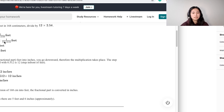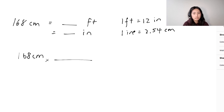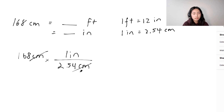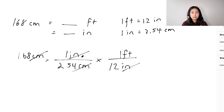You would start with 168 centimeters. Because this is in centimeters, you use 2.54 centimeters in the denominator to cancel out those units, leaving inches. Then to convert inches to feet, you use 12 inches in the denominator and 1 foot in the numerator. So instead of writing 1 over (12 × 2.54), it's better to write (1 inch / 2.54 cm) × (1 foot / 12 inches).